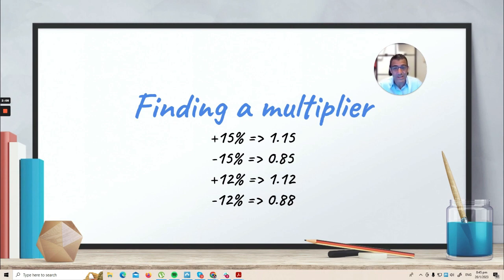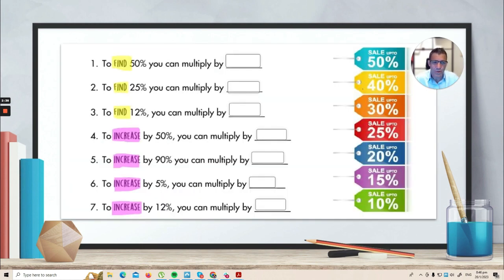And if you want to decrease the number by 15%, you multiply by 0.85. So similarly, if you wanted to increase the number by 12%, you should multiply it by 1.12. And if you think about 100 minus 12, that's 88. You should multiply a number by 0.88 to decrease it by 12%. So I've set up a few questions here for you to try.